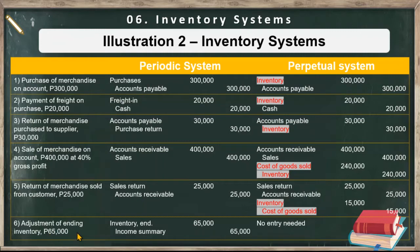Then we have the adjustment of ending inventory for 65,000 based on the physical count. Under periodic: debit inventory end and credit income summary 65,000. For the perpetual inventory system, we don't need to prepare an entry anymore because if we trace the transactions — 300 plus 20 minus 30 minus 240 plus 15 — you will arrive at the 65,000 ending inventory balance.